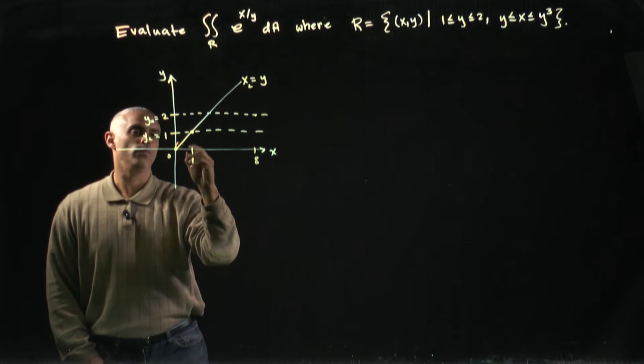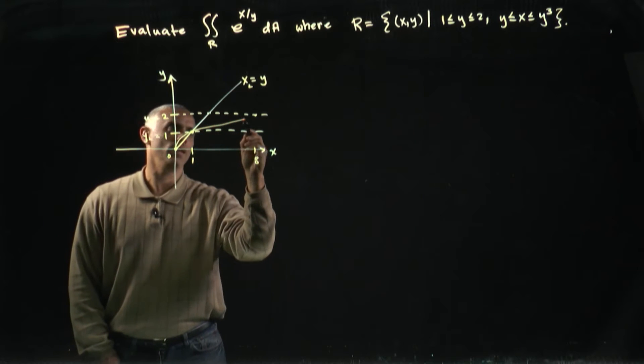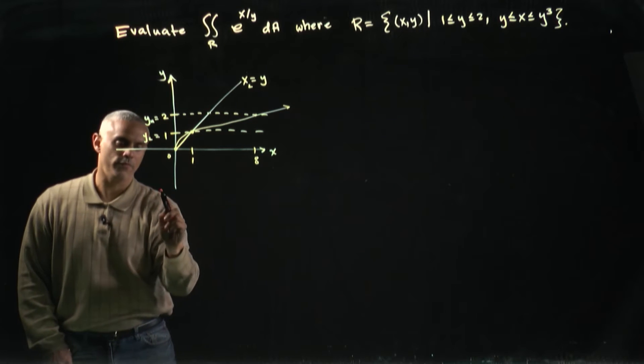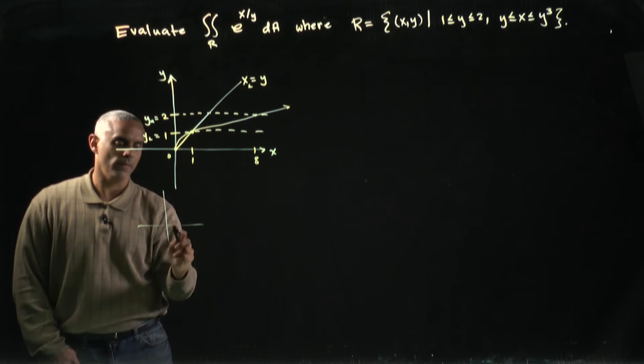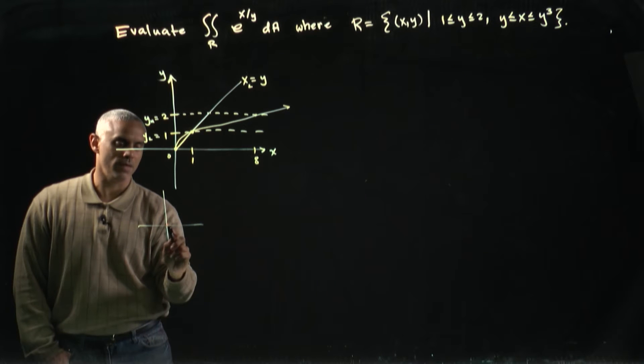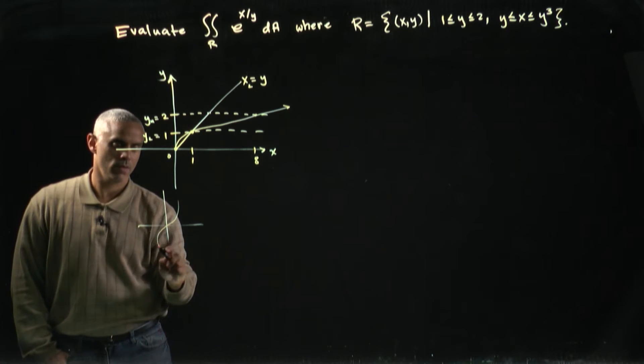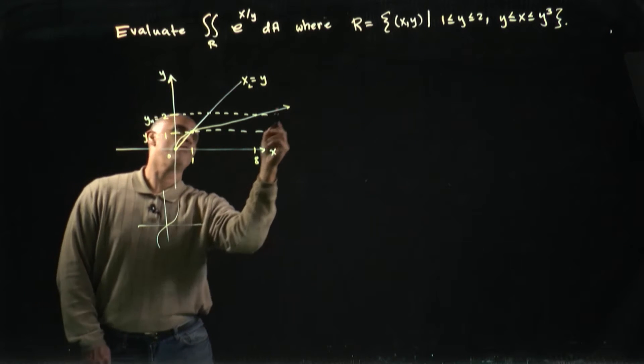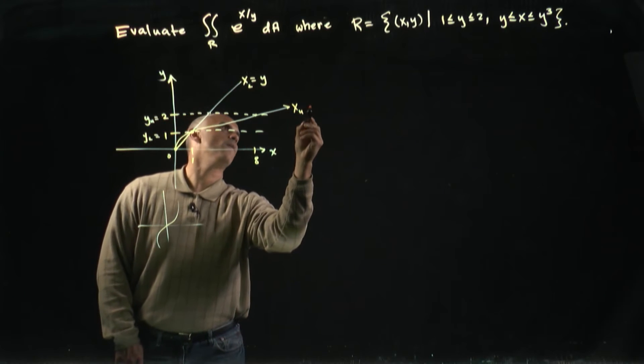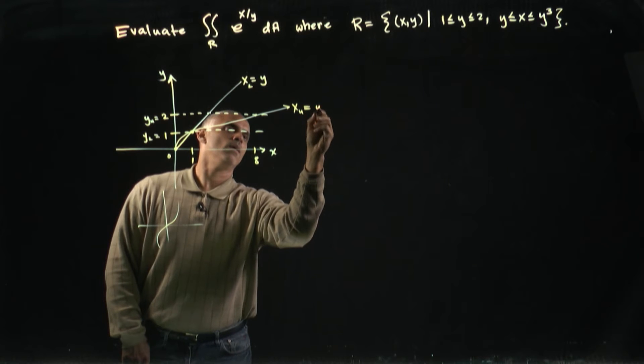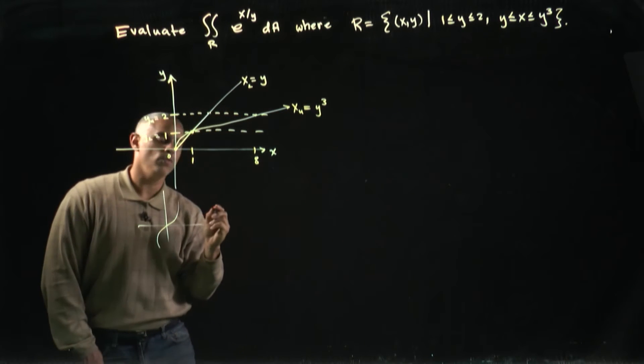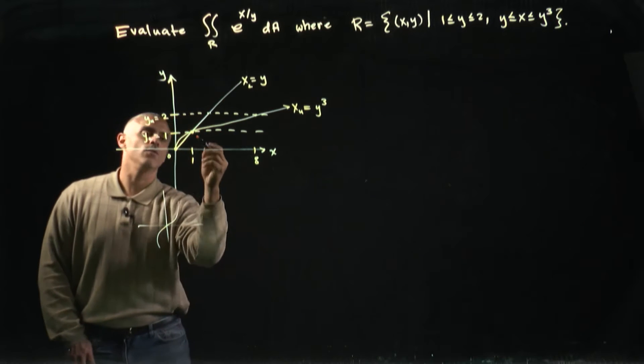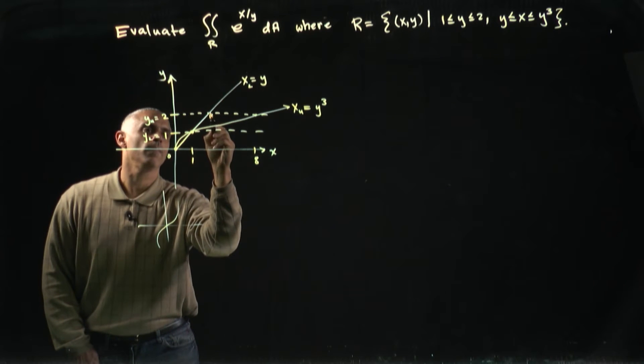And y cubed, we know that it has sort of this bendy character, so we should be familiar with y equals x cubed, it looks something like this, all right. So if we now write this as x upper equals y cubed, now we should be able to write our approximating arrow. So it's clear that this is our region R here, that's bound inside of this piece.